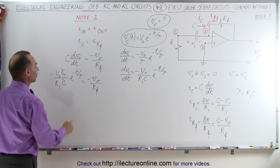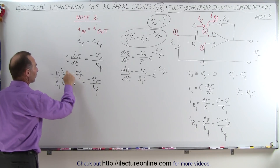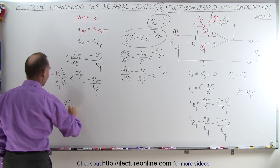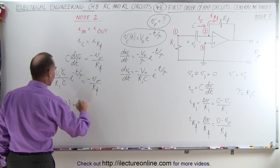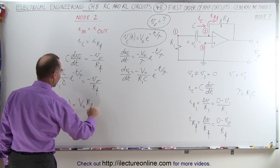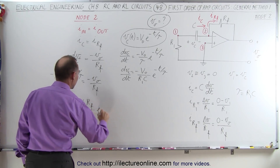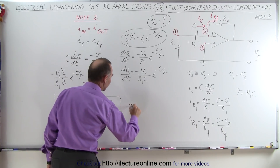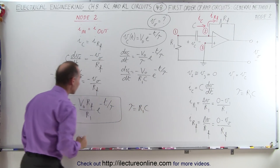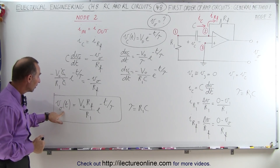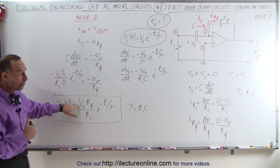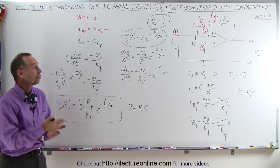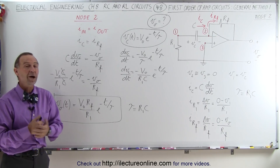First of all, we know that the C's cancel out. We take R sub f, move it over, get rid of the negative signs, and turn the equation around. So the output voltage as a function of time is equal to the initial voltage times the feedback resistance divided by R1, times e to the minus t over tau, where tau is equal to R1 times C. And so here we now have an equation for the output voltage in terms of the initial voltage across the capacitor, the feedback resistor, R1, and the time constant. That's how we understand the voltage of the output of that operational amplifier.